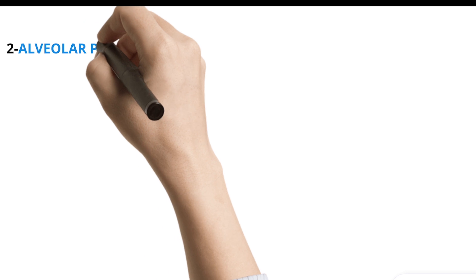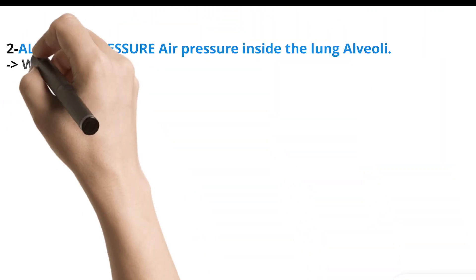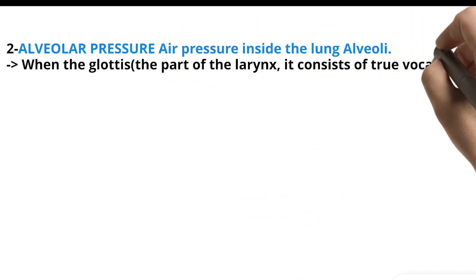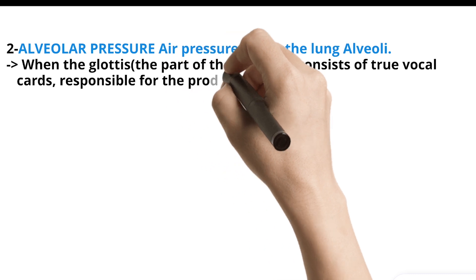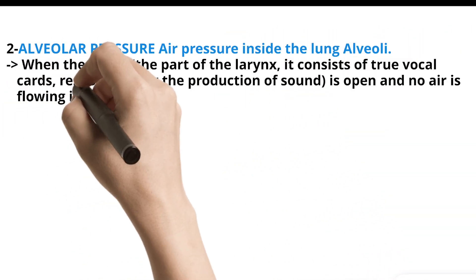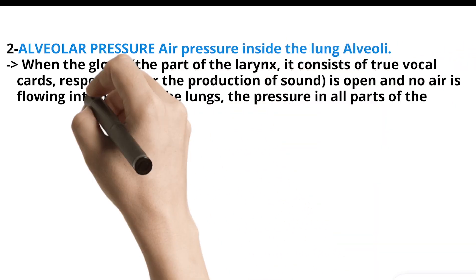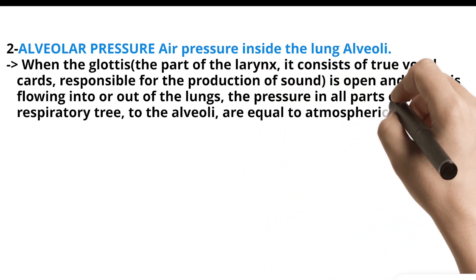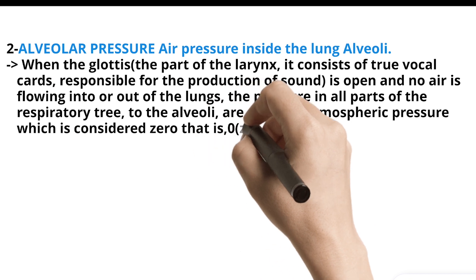2. Alveolar pressure is the air pressure inside the lung alveoli. When the glottis — the part of the larynx consisting of the true vocal cords, responsible for the production of sound — is open and no air is flowing into or out of the lungs, the pressure in all parts of the respiratory tree, to the alveoli, is equal to atmospheric pressure, which is considered zero centimeter water pressure.